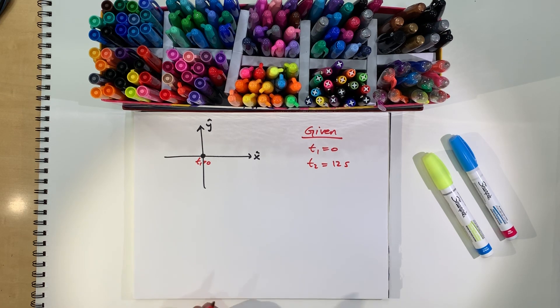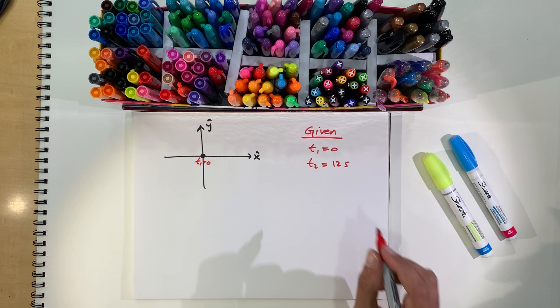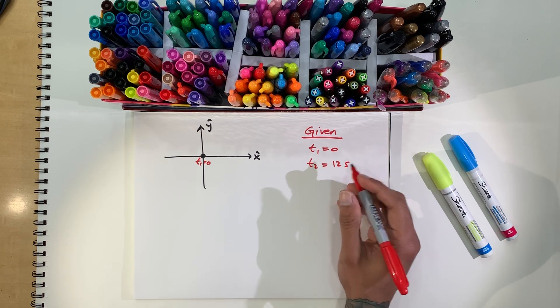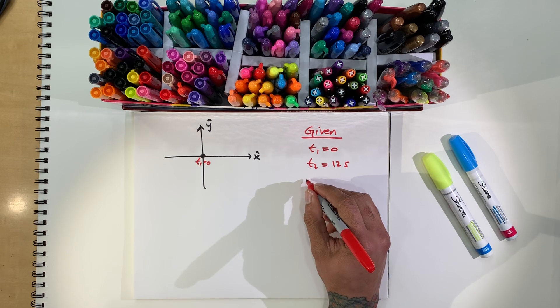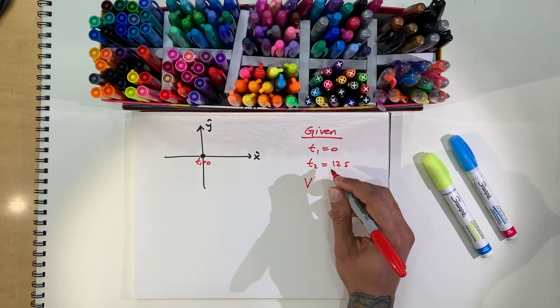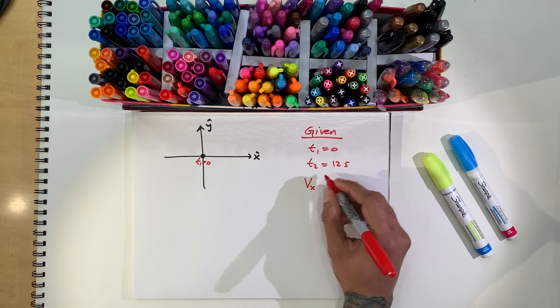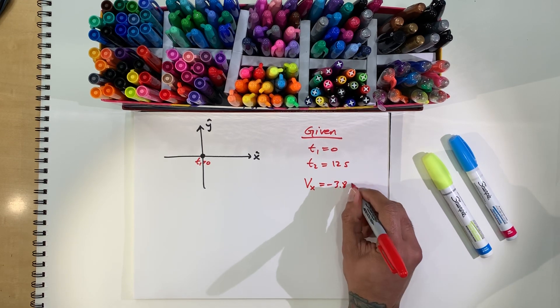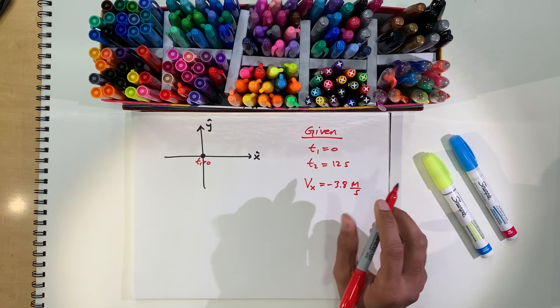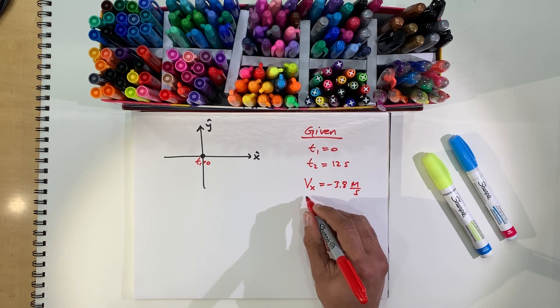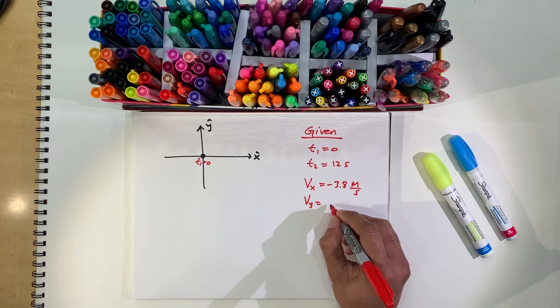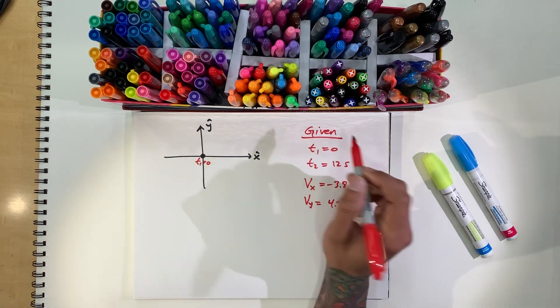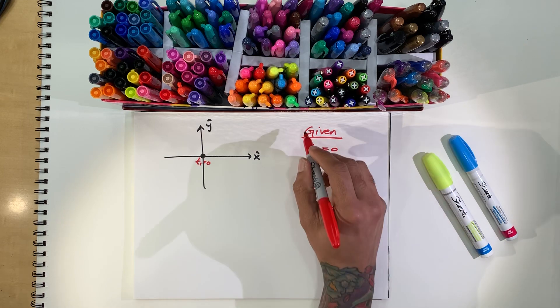The rhino's average velocity has an x component of negative 3.8 meters per second. So, we have the average velocity in the x direction is negative 3.8 meters per second. And the velocity in the y component is 4.9 meters per second. Let's see. All right, so this is everything that's given.